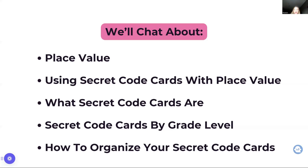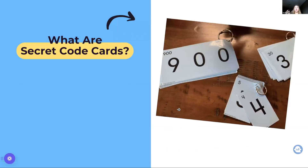What are secret code cards? They're called secret code cards because there are secret zeros hiding in these numbers. The secret code card really is a place value card — if you have different resources or curriculum, a lot of times they'll call them a place value card. They're not unique to Math Expressions; it is a Montessori tool that was adapted by Montessori, but what is unique to the place value cards in expressions is the back of the cards.